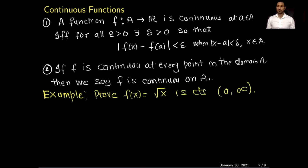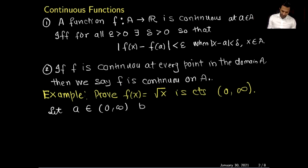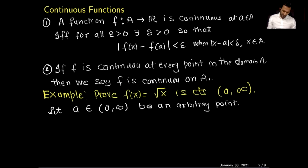Next, I will give you an example in which we will prove that the function f(x) = √x is continuous on the interval [0, ∞). I will prove this using the epsilon-delta definition of continuity. Let a belong to this interval [0, ∞) be an arbitrary point. I will prove that the function f(x) is continuous at a.